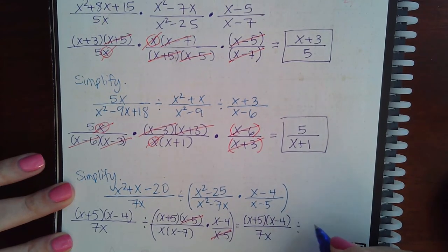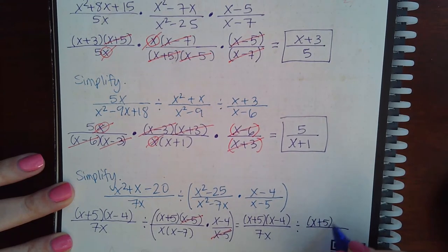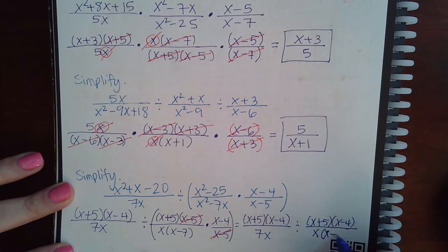Divided by. And then this will become one fraction. x plus 5 times x minus 4. The whole numerator. And then x times x minus 7.